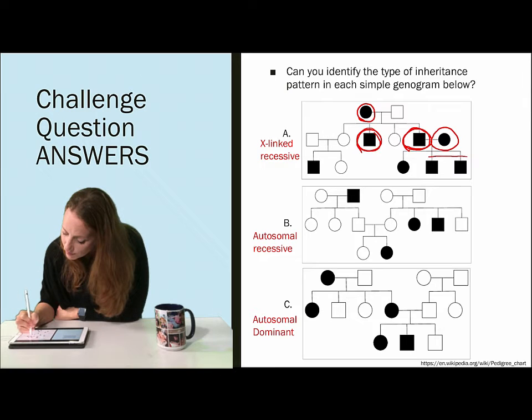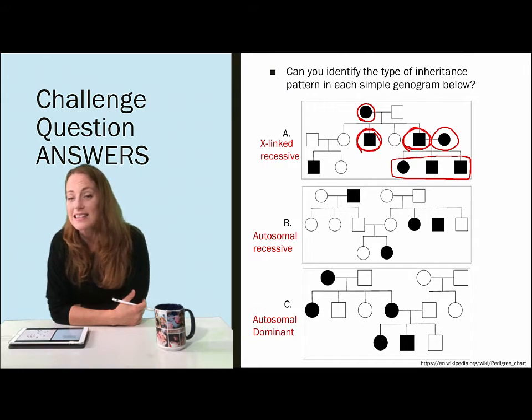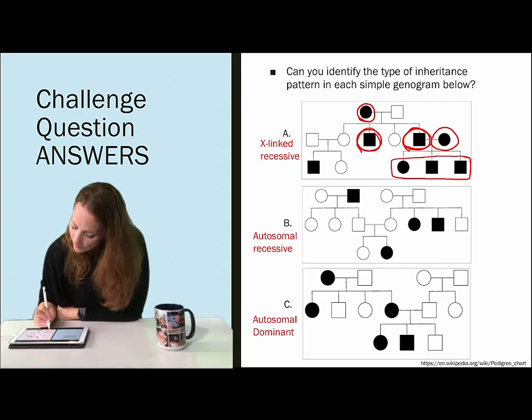both of their male and female children were affected by that condition in the third generation. So this is a classic X-linked recessive trait.